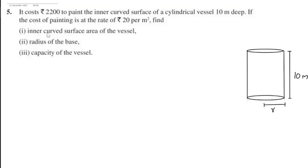Hello students, this is question number 5, exercise 13.6. It costs Rs 2200 to paint the inner curved surface of a cylindrical vessel 10 meters deep. If the cost of painting is at the rate of Rs 20 per meter square, find the inner curved surface area of the vessel, the radius of the base, and the capacity of the vessel.